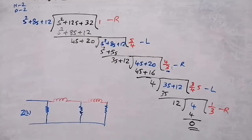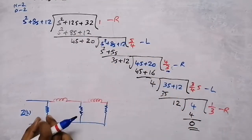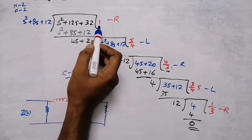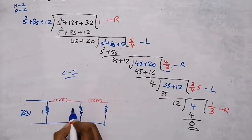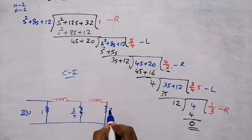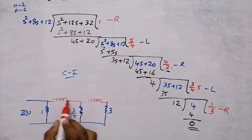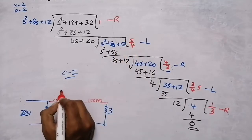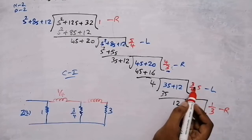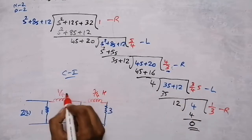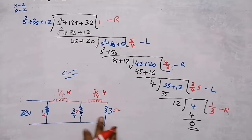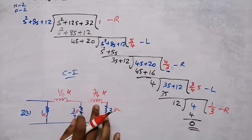For the element values in Cauer 1: resistors are in shunt (parallel), so take the reciprocal of the constant quotient terms. R₁ = 1/1 = 1 Ω, R₂ = reciprocal of 4/3 = 3/4 Ω, R₃ = reciprocal of 1/3 = 3 Ω. For inductors, they are in series, so write values directly: L₁ = 1/4 H (coefficient of s/4), L₂ = 3/4 H. Units are Henry for inductors and Ohm for resistors.